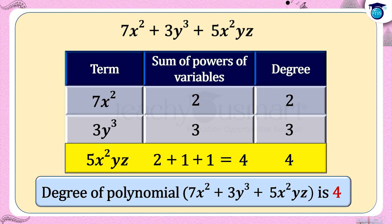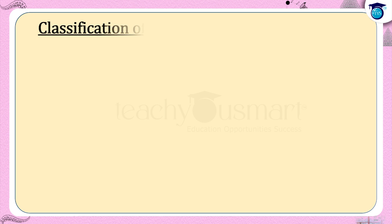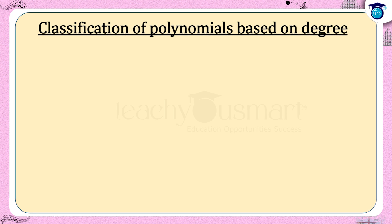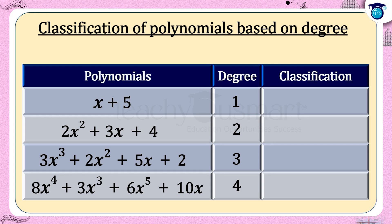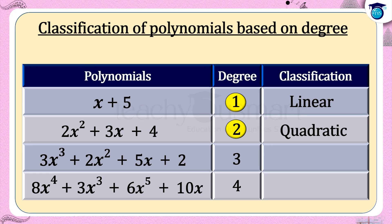In this chapter we study polynomials containing only one variable. Now let us see the classification of polynomials based on degree. A first degree polynomial is called a linear polynomial. A second degree polynomial is called a quadratic polynomial. A third degree polynomial is called a cubic polynomial.